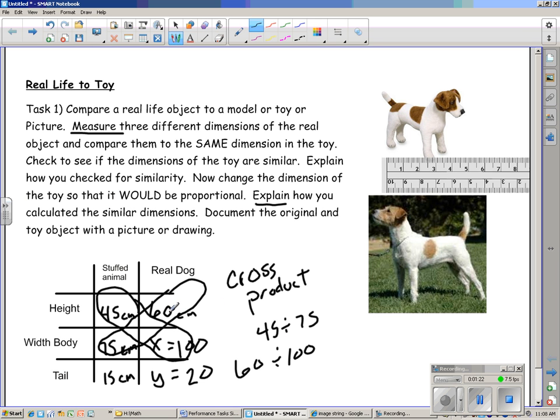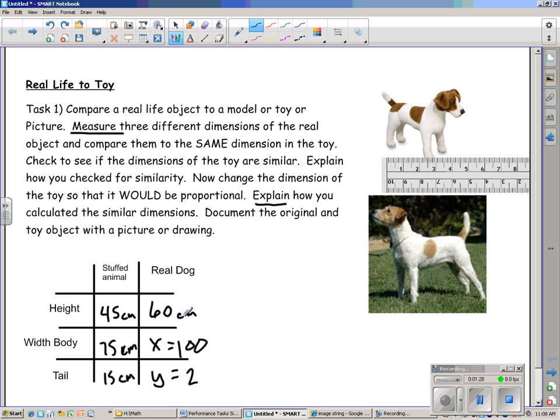And then, I want you to choose one number to actually be the exact same on the shape and say, if I measure this, and if this really is 60 centimeters on the model, what should they have made the width of the body and the tail? You're going to show it in a proportion, show your work, and document it. That is task one.